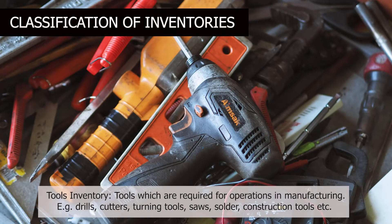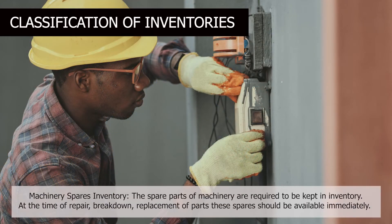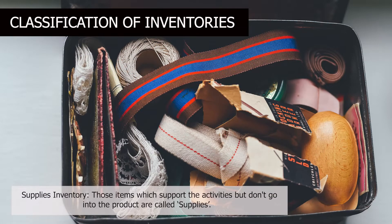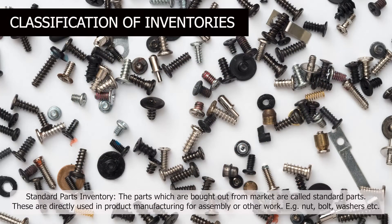Tool inventory includes various tools such as mason tools, drills, cutters, turning tools, different types of saws, measuring tools, and marking tools. Machinery spares are the spare parts required for repairing during breakdowns or replacement — they are called machinery spares. Supplies inventory refers to items that support the activity but do not go into the product. The seventh type is standard part inventory — parts brought from the market and directly used in construction, such as different types of steel rods, bathroom and toilet accessories, and different types of tiles.